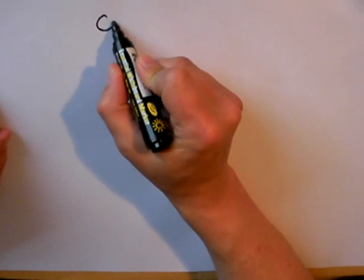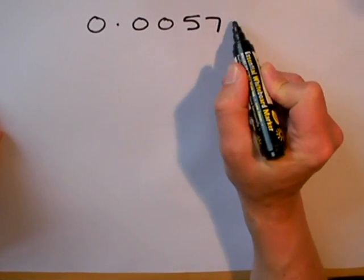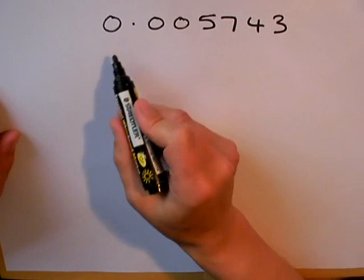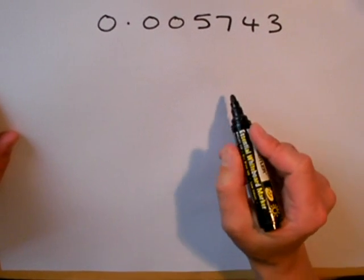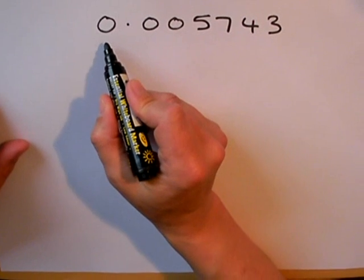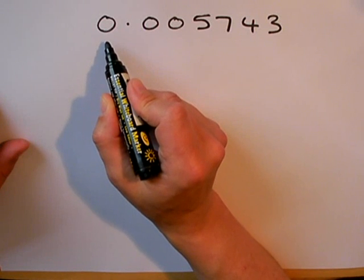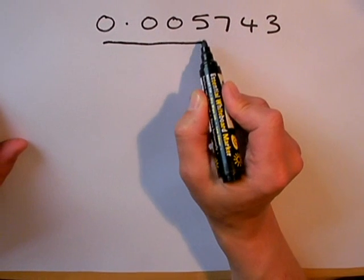As well as large numbers I can also round small numbers off to so many significant figures. This is a very small number 0.005743. If I want to round this off to one significant figure, it's not this number that's my significant figure. My first significant figure is my first non-zero number. So that's the number 5.